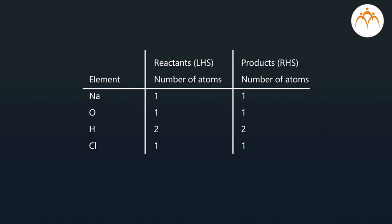H has two atoms both on the reactant as well as product side. Cl has one atom on the reactant side and one atom on the product side. Number of atoms of all the elements on the reactant and product side are same, so the reaction is balanced.